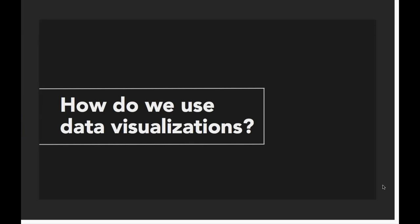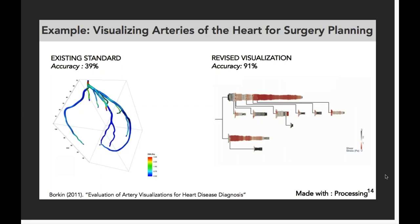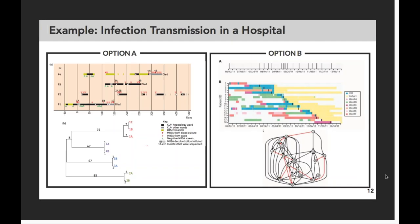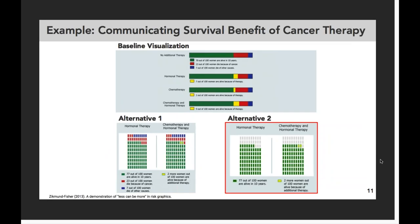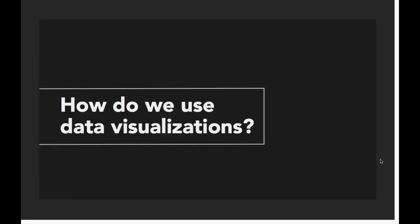Now we're going to talk about how we use data visualizations — I'll pause for a moment if there are any questions. There's a question about software used for the data visualizations just shown. For the artery visualization, this was made with Processing, which is a JavaScript library. The earlier visualizations were likely made by hand — there was no reference in the papers as to whether any specific tools were used.